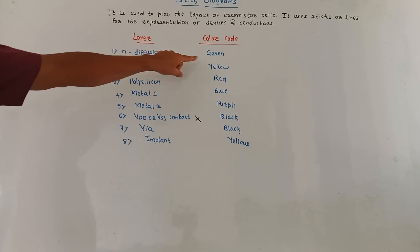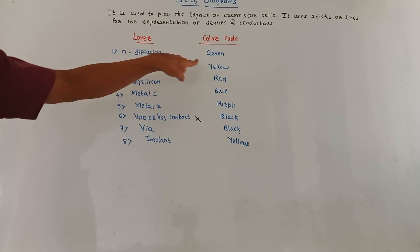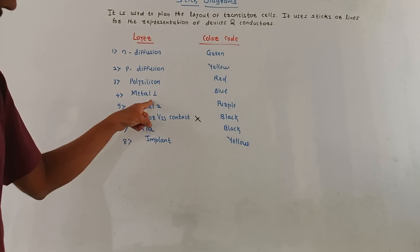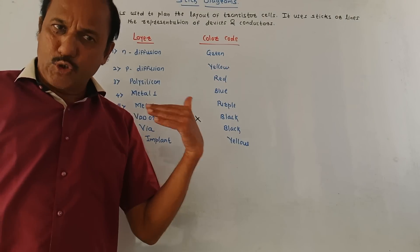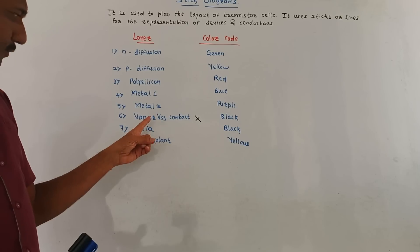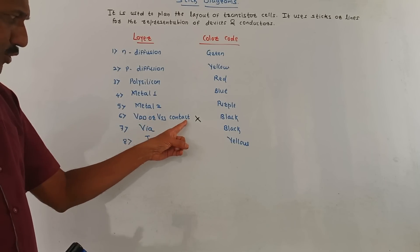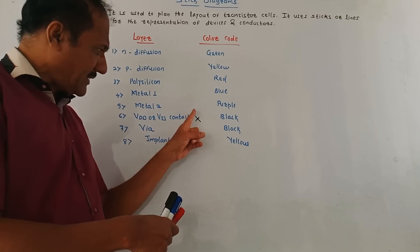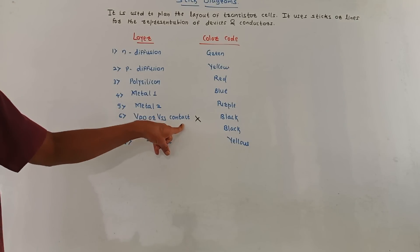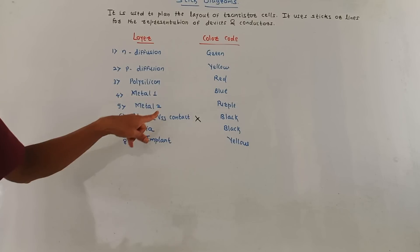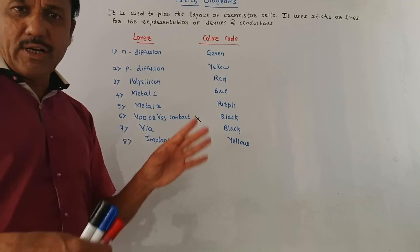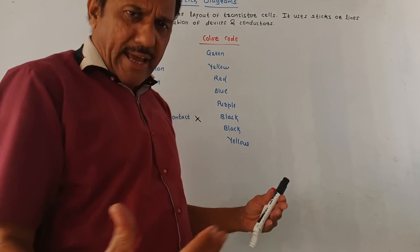The color codes are as follows: for N Diffusion layer, the color is green; for P Diffusion, it is yellow; for Polysilicon layer, red color is used; for Metal 1, blue color; and for Metal 2, dark blue or purple color is used. For VDD and VSS contacts — represented by a cross sign — black color is used. For VIA, again black color is used. And for Implant, yellow color is used.